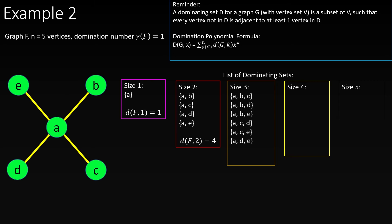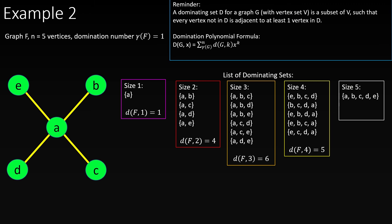There are six dominating sets of size three: ABC, ABD, ABE, ACD, ACE, and ADE, so the coefficient on the degree-three term will be six. There are five dominating sets of size four: EBCD, BCDA, EBDA, EBCA, and ECDA, giving a coefficient of five. Finally, there's only one dominating set of size five, ABCDE, so the coefficient on the degree-five term will be one. Using these values, this is our domination polynomial.